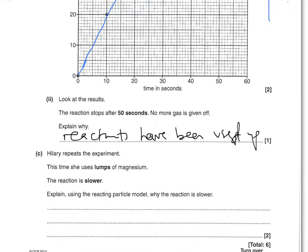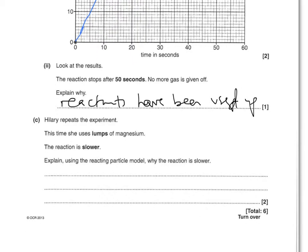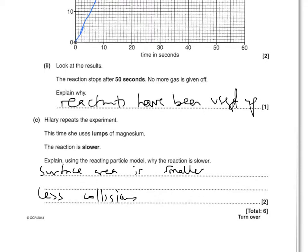Hillary repeats the experiment using lumps of magnesium and the reaction is slower. Explain using the particle model why the reaction is slower. The first point is that the surface area is smaller. The second point is saying why that matters: there are fewer collisions, or less frequent collisions.